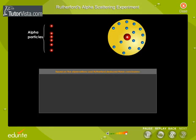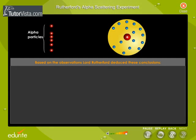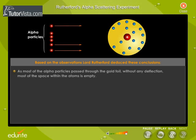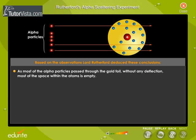Based on the observations, Lord Rutherford deduced these conclusions. As most of the alpha particles pass through the gold foil without any deflection, most of the space within the atoms is empty.